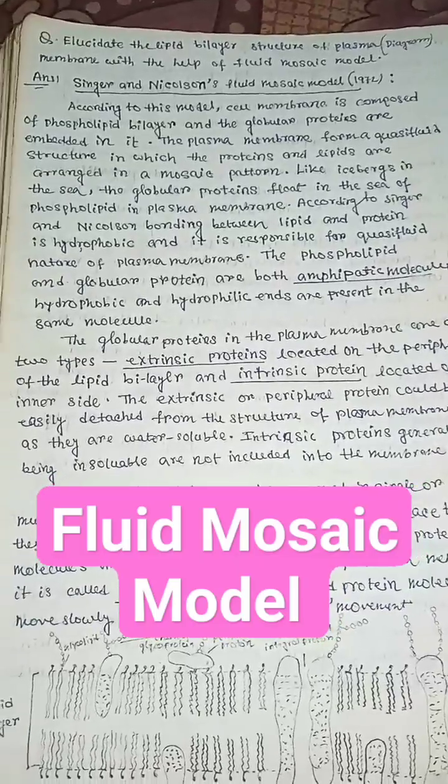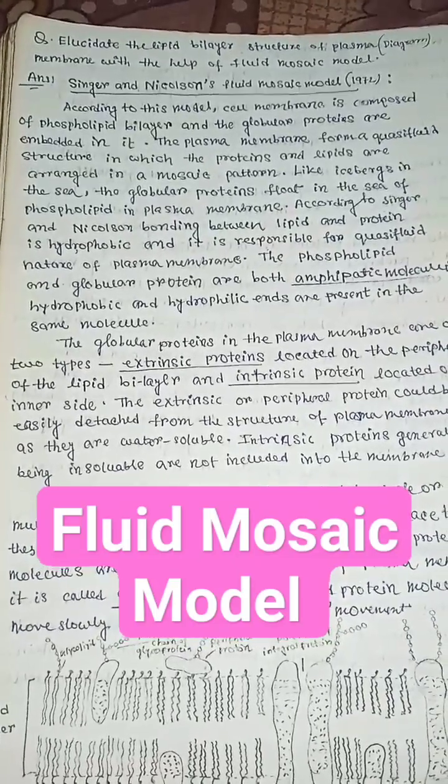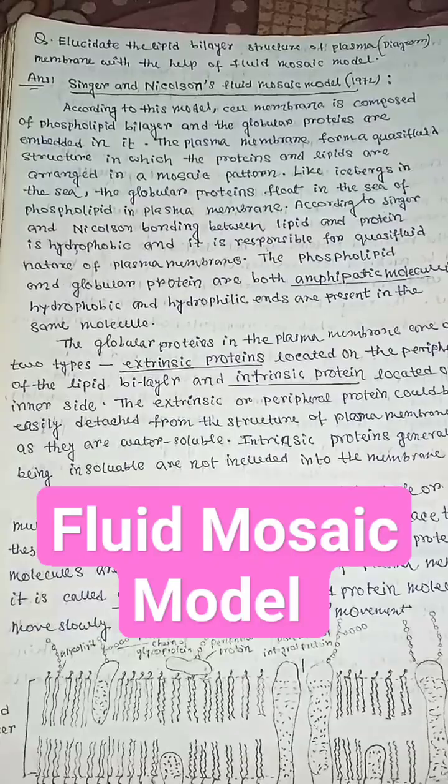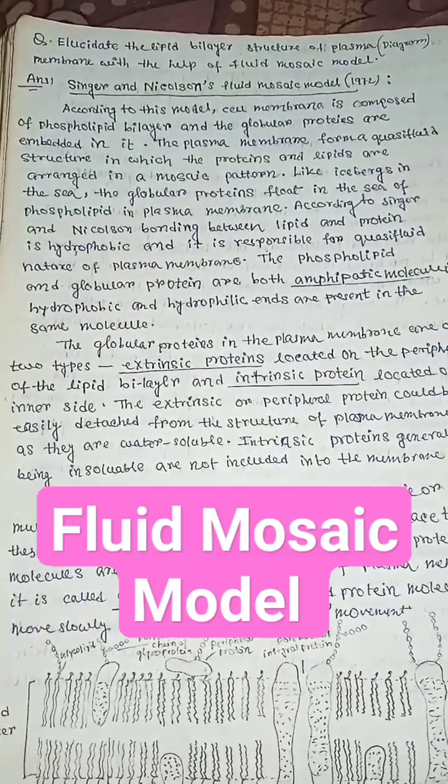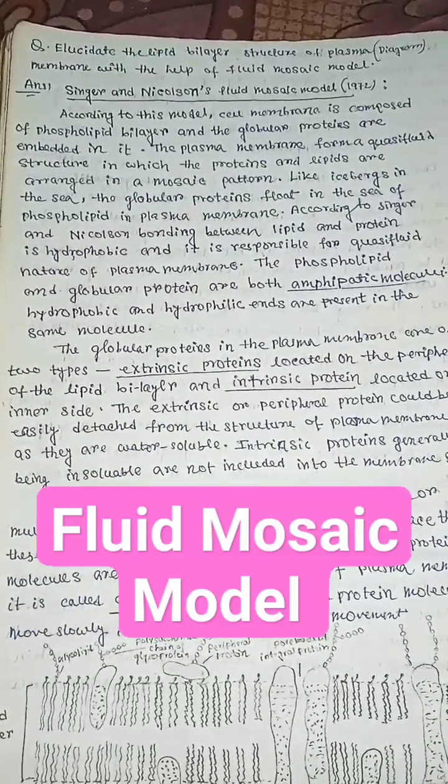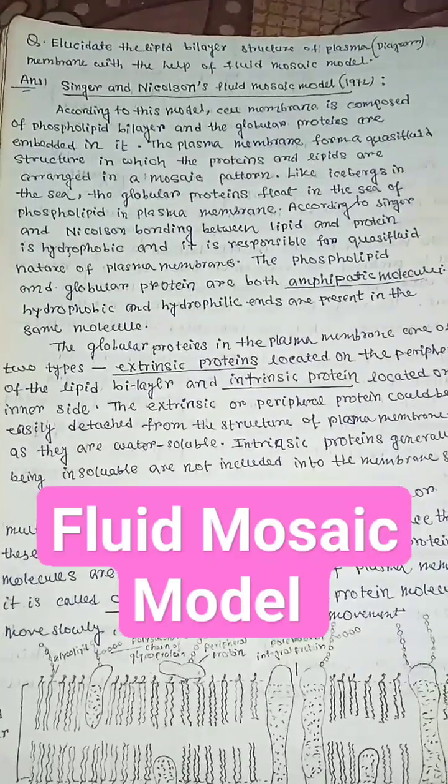The plasma membrane forms a quasifluid structure in which the proteins and lipids are arranged in a mosaic pattern. Like icebergs in the sea, the globular proteins float in the sea of phospholipid in plasma membrane.